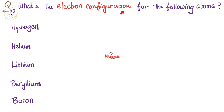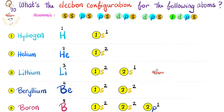Let's practice. What's the electron configuration for hydrogen, helium, lithium, beryllium, and boron? Hydrogen is element number 1, so we only have one electron. The configuration is 1S¹. Helium has 2 electrons: 1S². Lithium has 3 electrons — the first two fill the first shell, just like helium, then the next goes to the second shell: 1S², 2S¹.